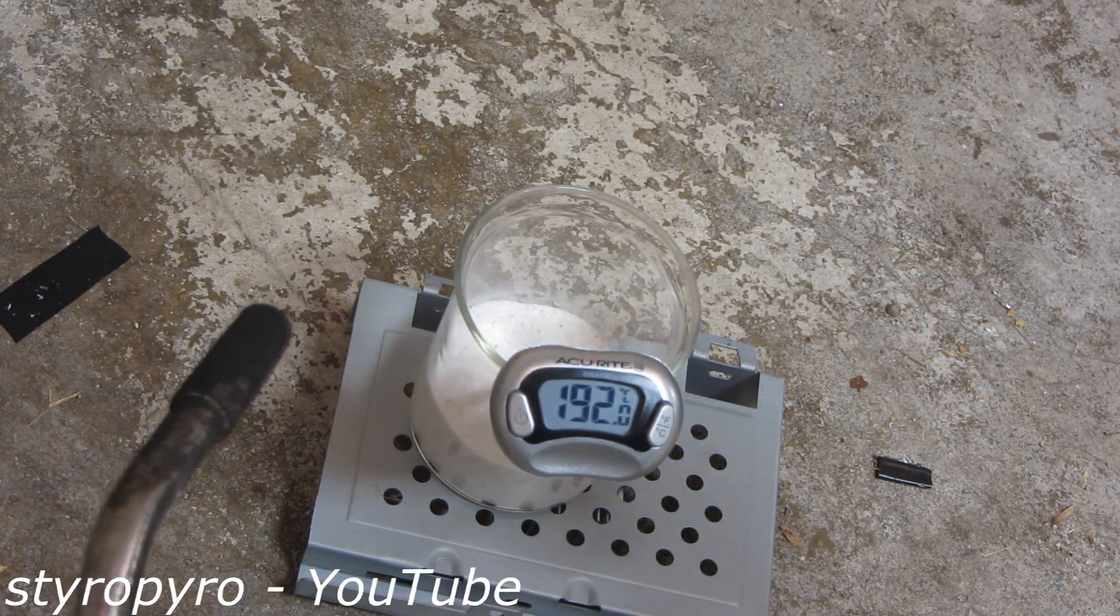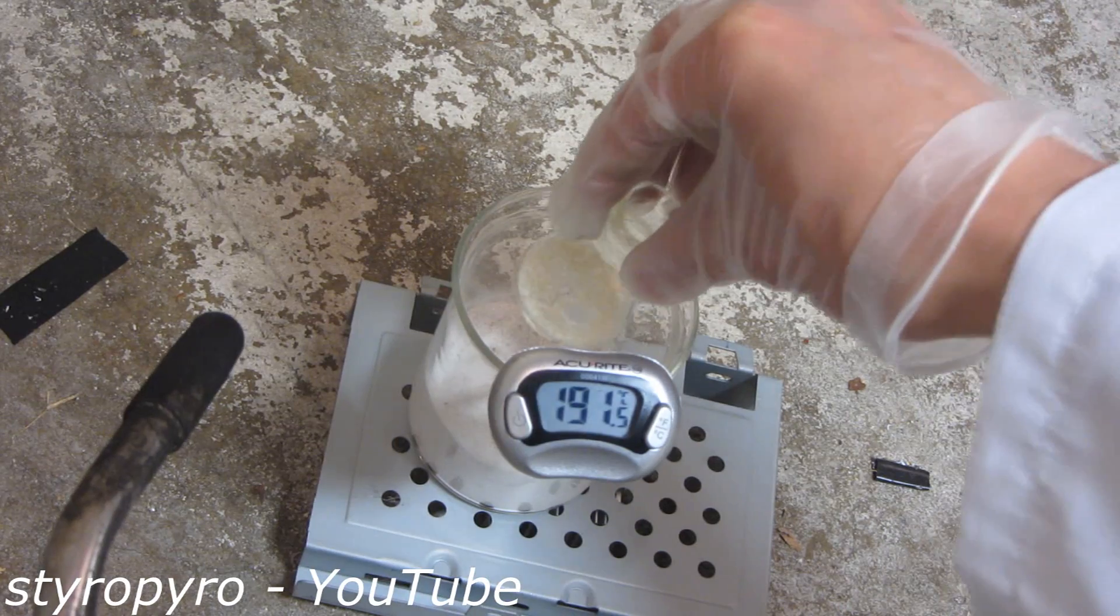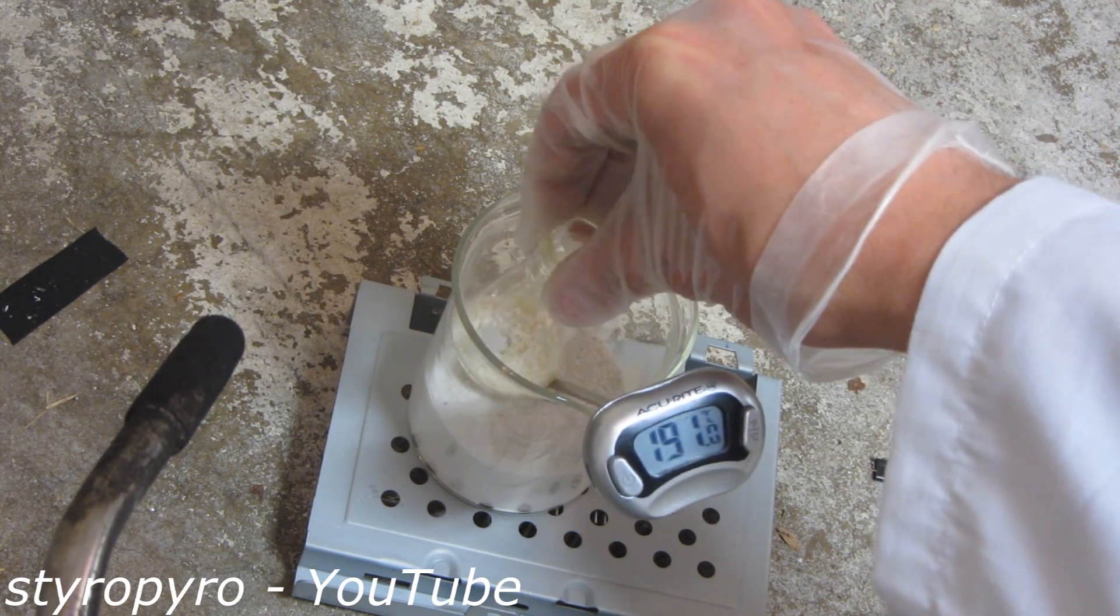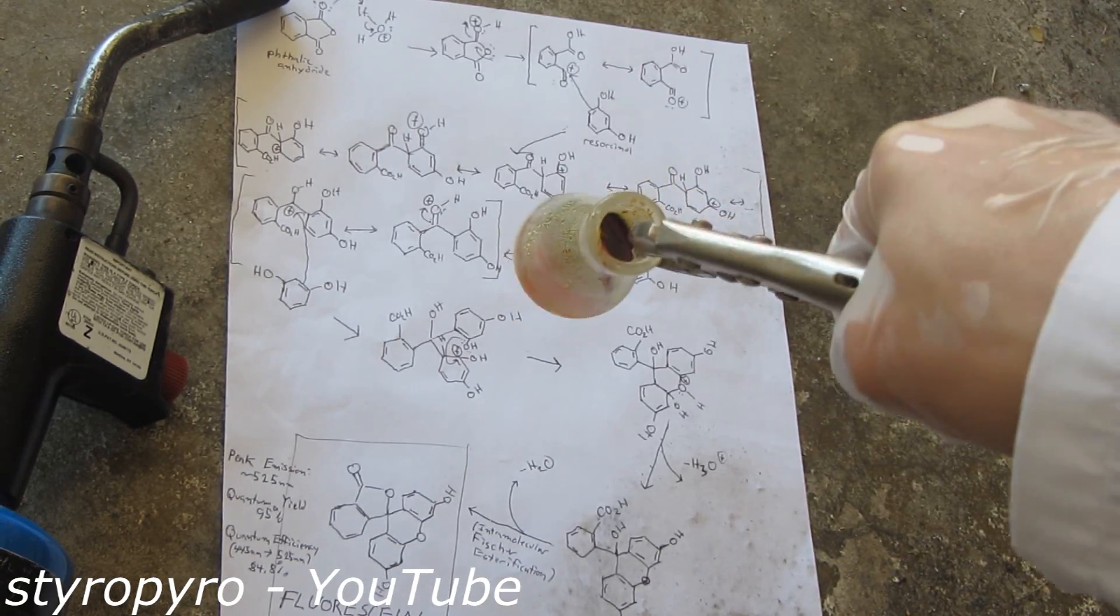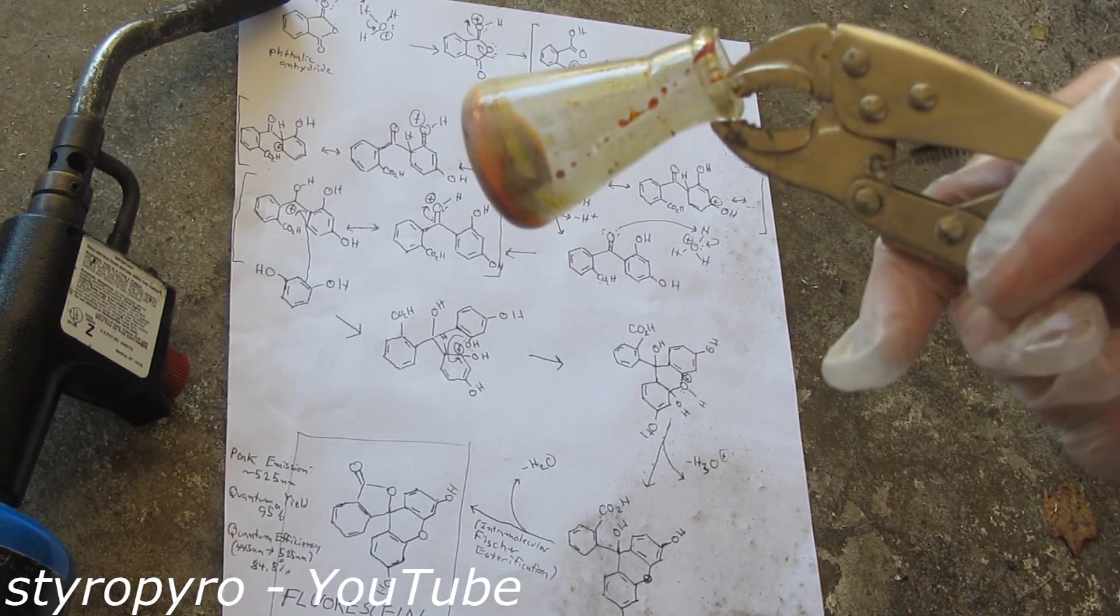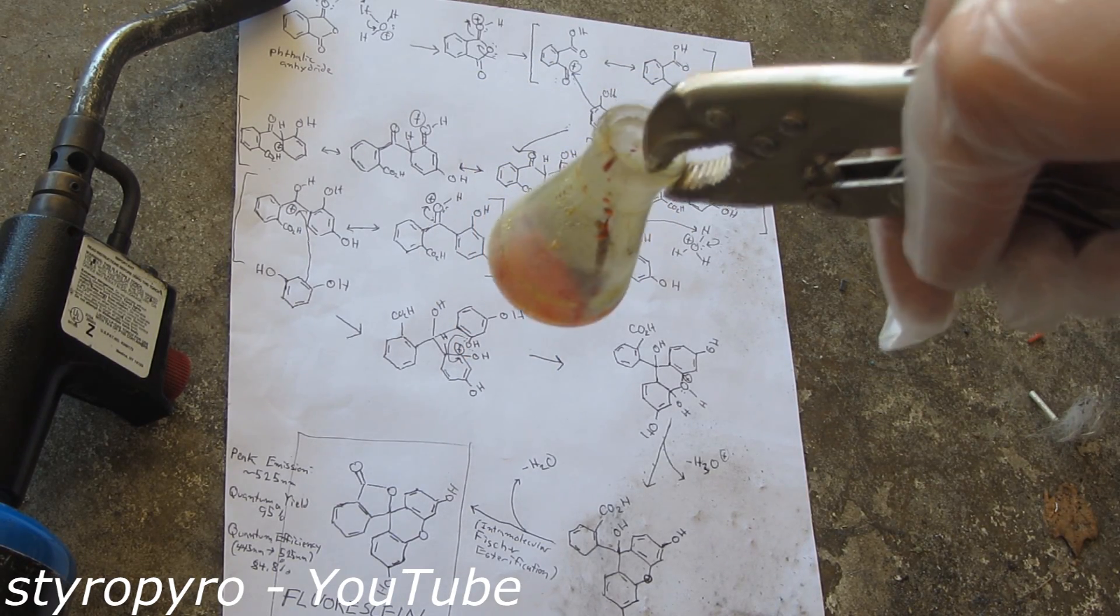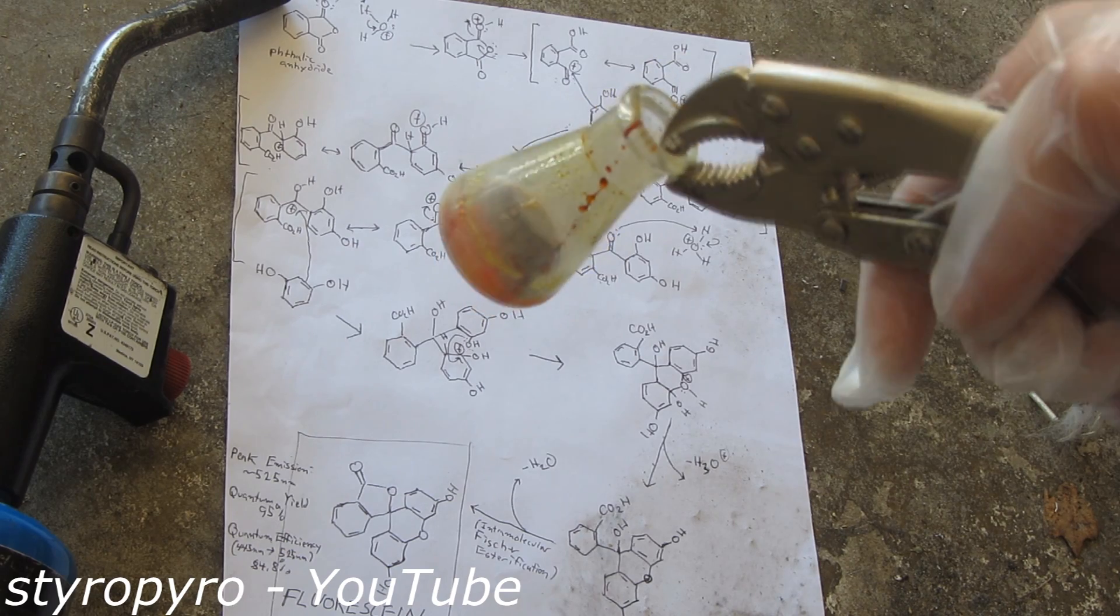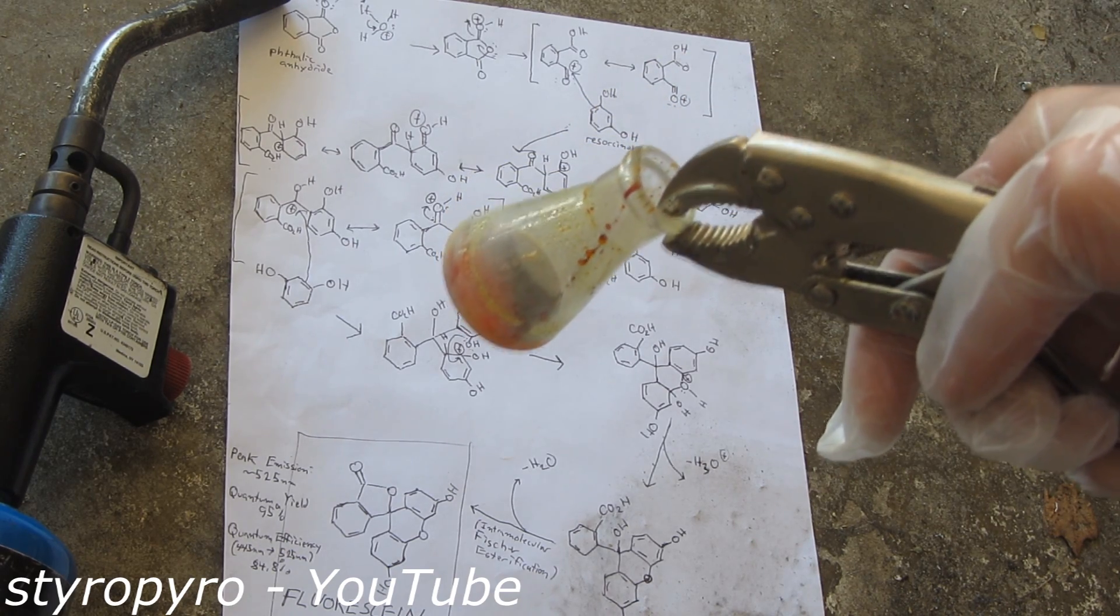I've got my sand bath heated to just under 200 Celsius. So now I can add my chemicals here and start the reaction. My reaction is completed and it appears to have been successful. That really strong red color there suggests a very concentrated fluorescein. So I'll let it cool down for a little bit and then I'll extract it.